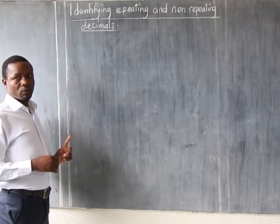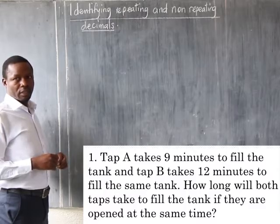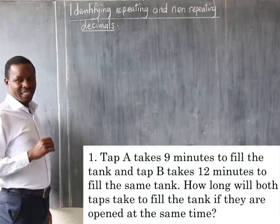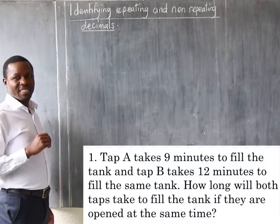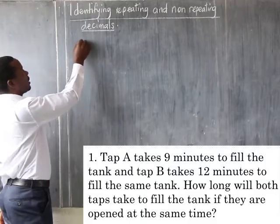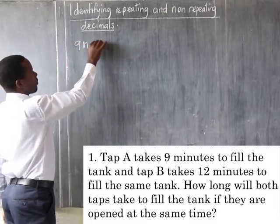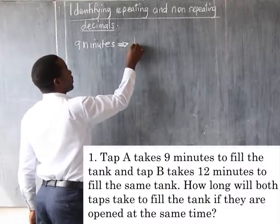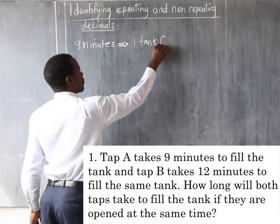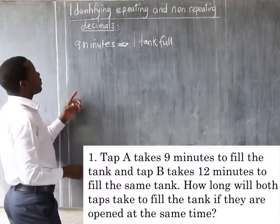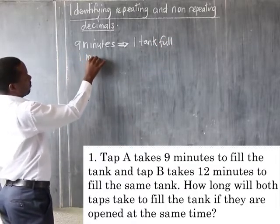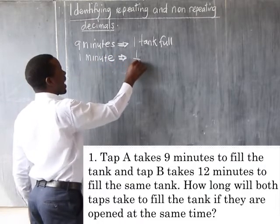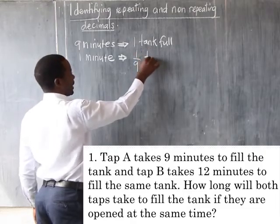Number one: I hope you have the question with you so I will not waste time reading it. The question says tap A takes 9 minutes to fill the tank. So that means 9 minutes are enough for a tank to be full. So we need to know what time it will take in 1 minute — in 1 minute this tank will be 1 out of 9 full.